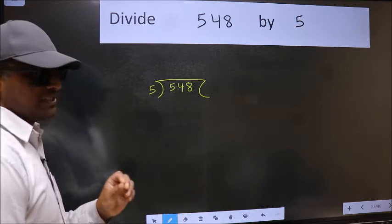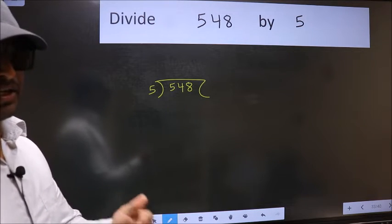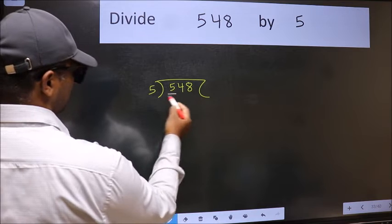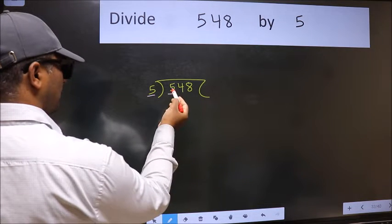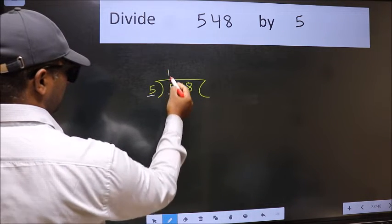This is your step 1. Next, here we have 5 and here also 5. When do we get 5 in 5 table? 5 once 5.